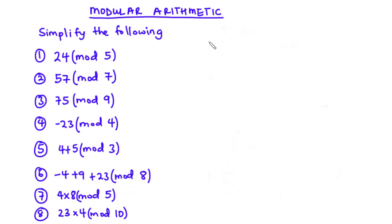Hello students, good day and welcome back to this channel. In today's video we are going to look at the topic modular arithmetic — we are going to learn how to calculate the value of numbers for a given modulo. Modular arithmetic, sometimes called modulo arithmetic or clock arithmetic, is a system of arithmetic for integers where numbers wrap around after they reach a certain value called the modulus.